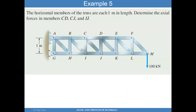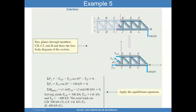Example five: the horizontal members of this truss are one inch in length. Determine the axial forces in members CD, CJ, and IJ, with 100 kN applied. We cut across CD, CJ, and IJ since those are the forces we want to find. I have 100 kN applied. Sum forces in X and Y direction for the resulting free body diagram. Sum moments about J where I have the most unknowns. With three equations and three unknowns — the tensions in each of these bars — I am able to solve for all the loads in each of these members.